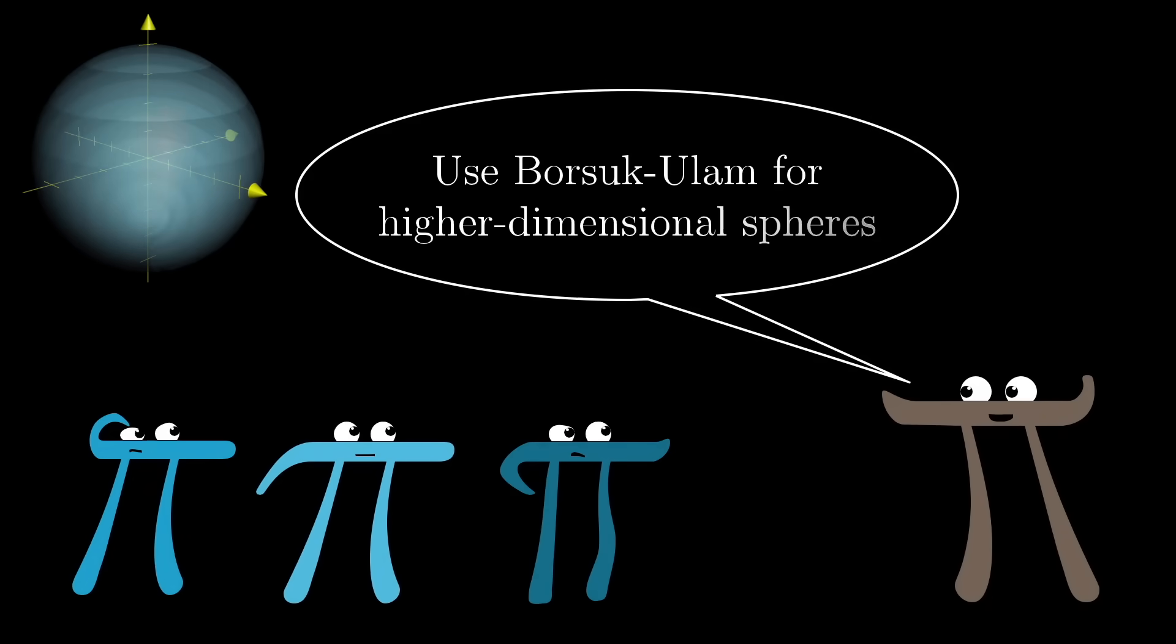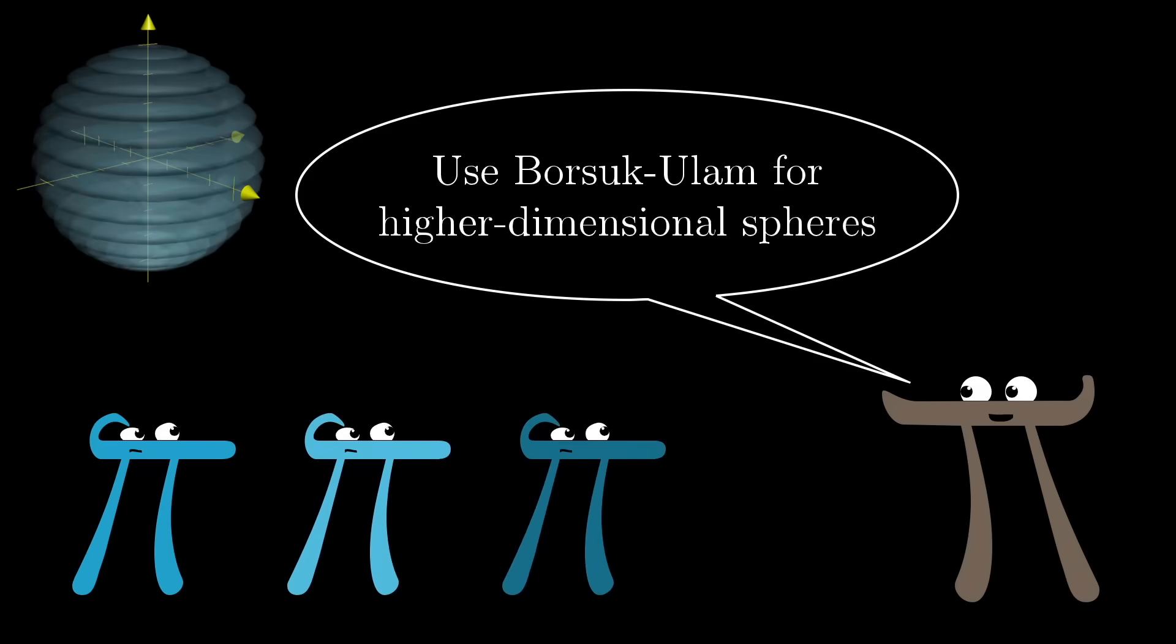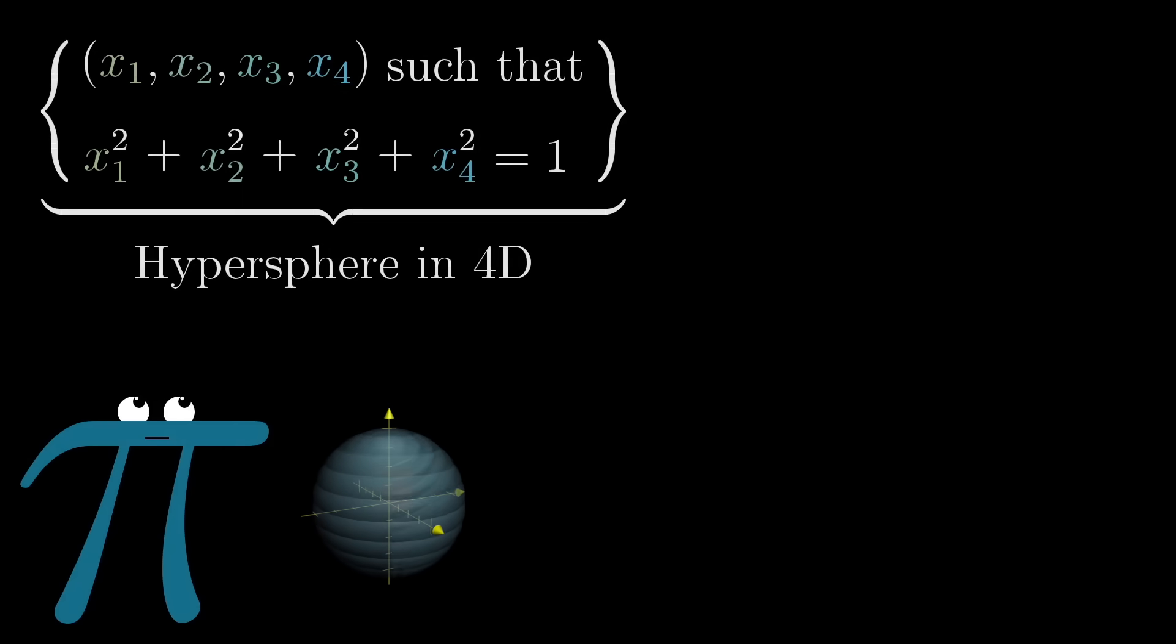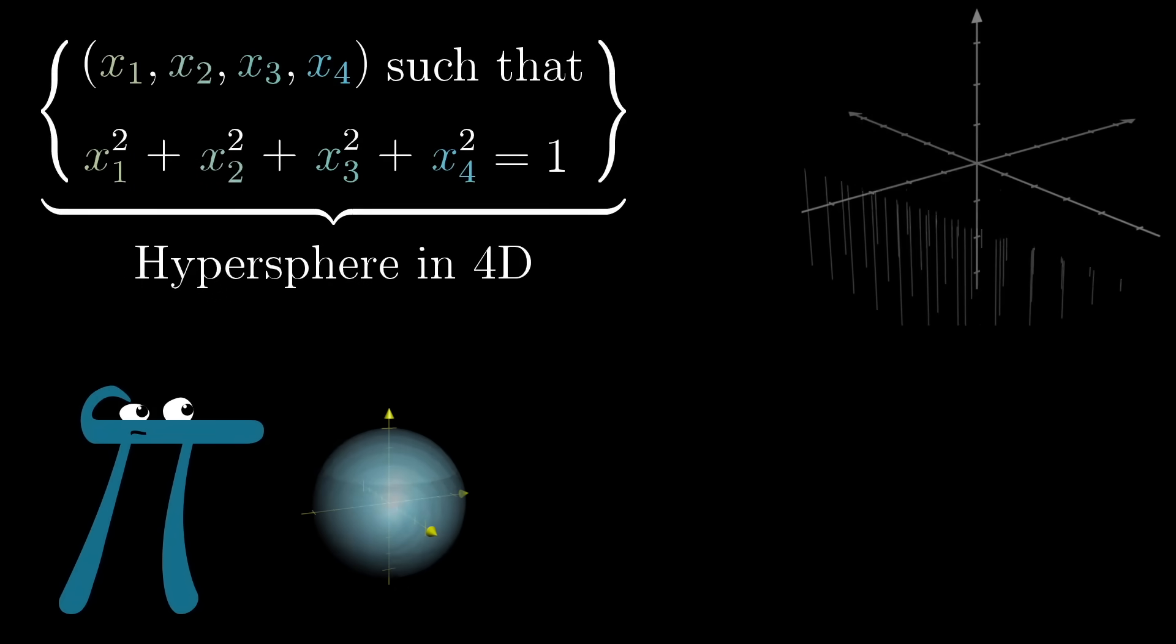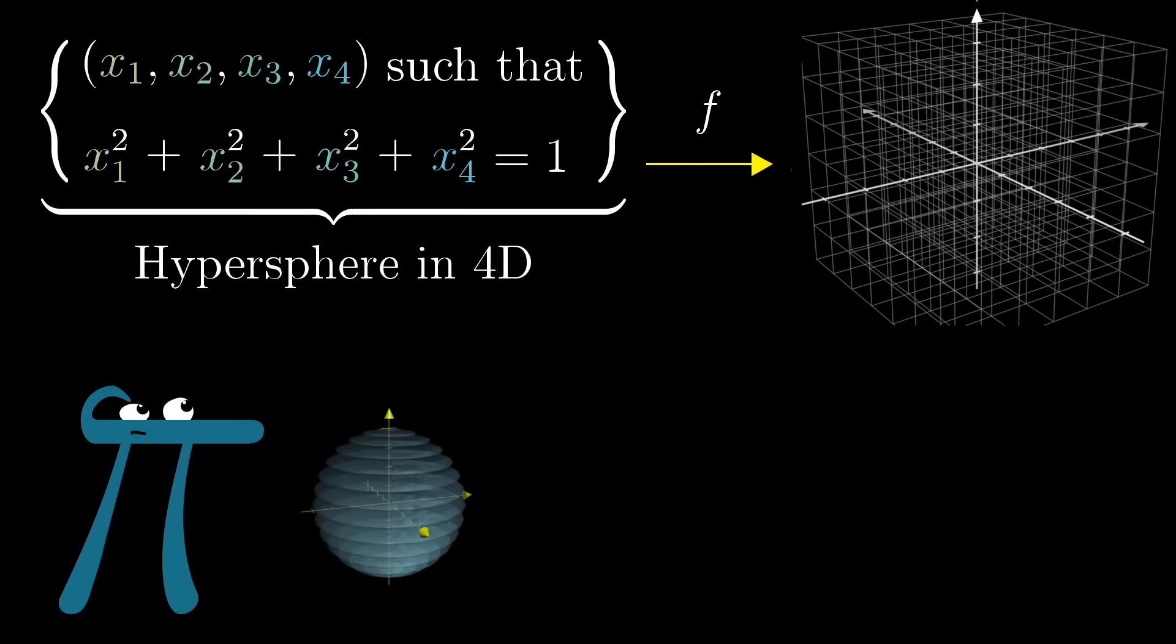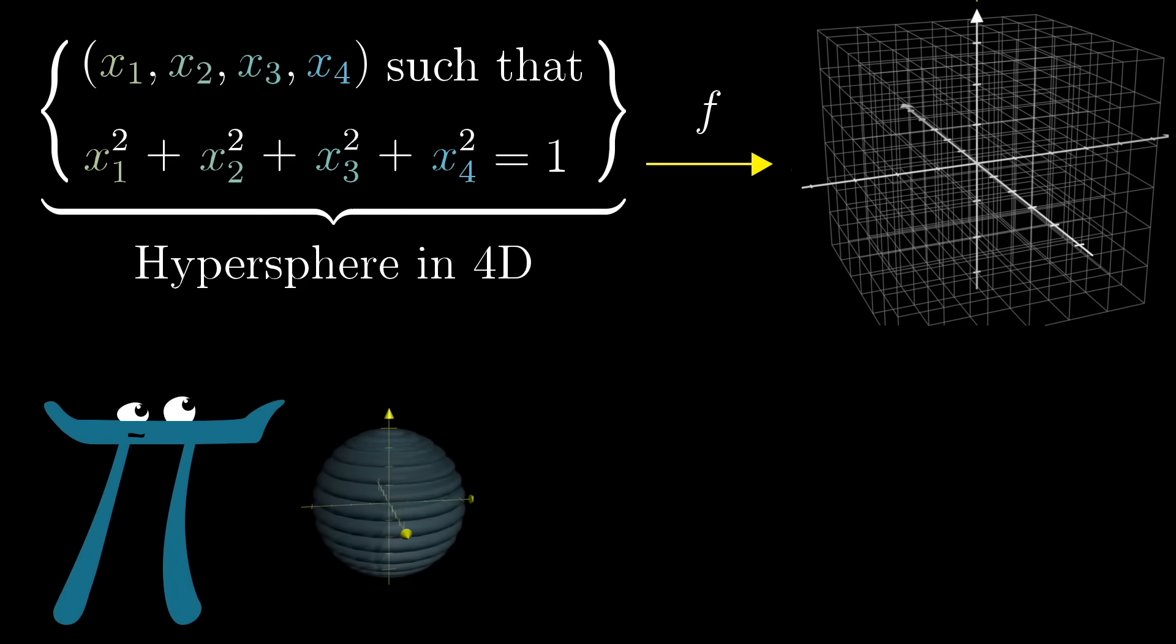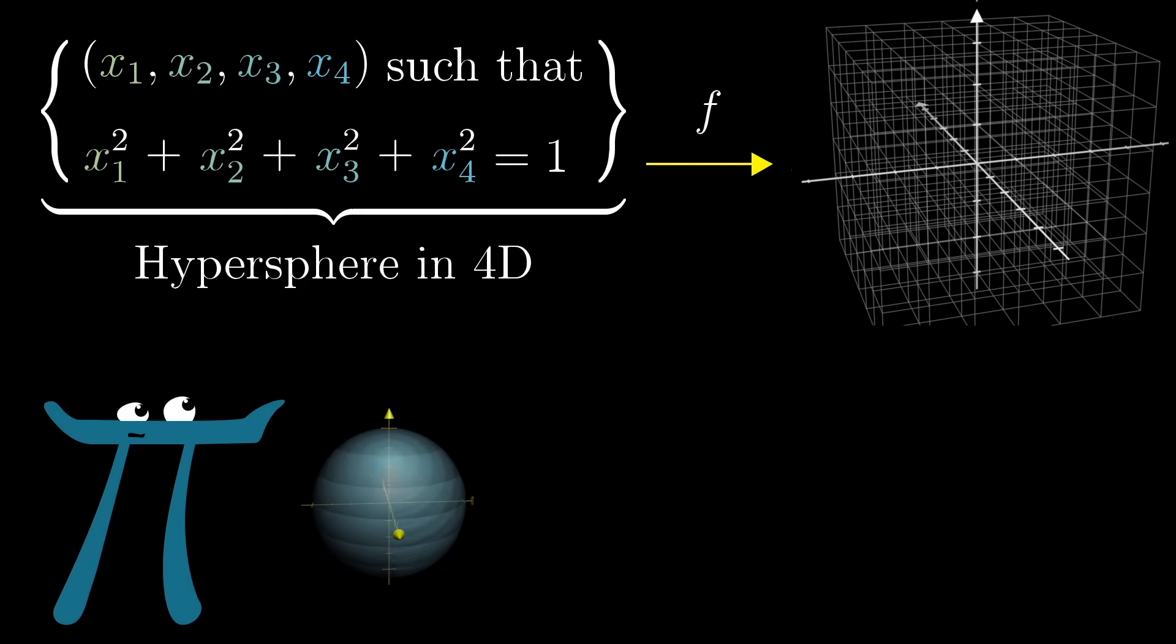The main thing to mention is that there is a more general version of the Borsuk Ulam Theorem, one that applies to higher dimensional spheres. As an example, Borsuk Ulam applies to mapping hyperspheres in 4D space into three dimensions. And what I mean by a hypersphere is the set of all possible lists of four coordinates where the sum of their squares equals one.